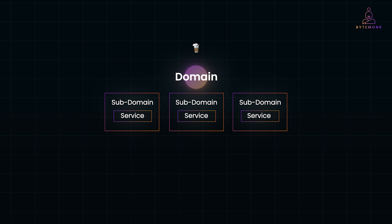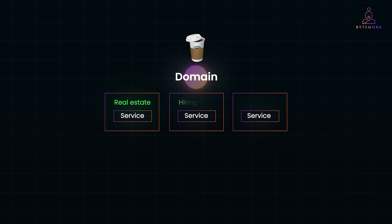For example, Starbucks isn't just about making great coffee. It also involves real estate decisions, hiring staff, managing finances, and marketing. These subdomains must work together to build a successful coffeehouse chain. Domain-driven design identifies three types of subdomains, each with a unique strategic value.